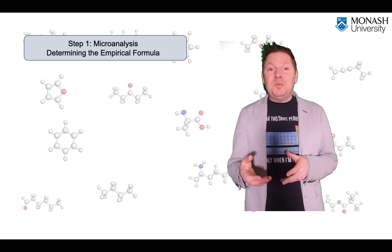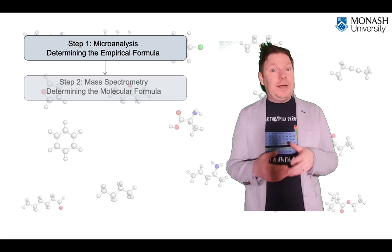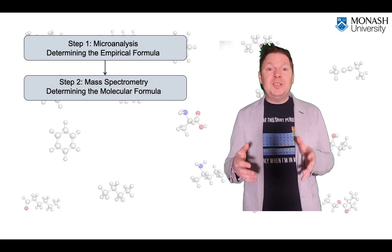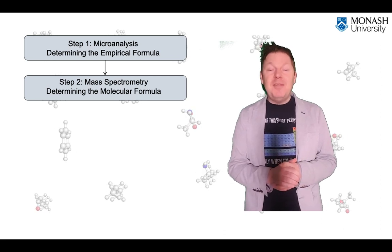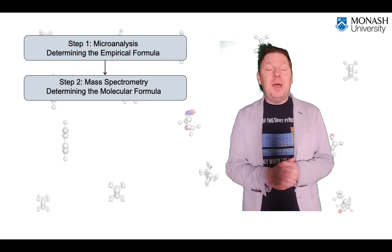Once we've got this, we can move on to mass spectrometry. Now, you can get a lot of information out of what we call the mass spectrum, but there's one piece of information which is most valuable, and that's determining the molecular mass.